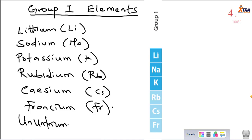Now let's go back and talk about the properties of group 1 elements. What are their general properties? We'll cover their physical characteristics — appearance, density, rigidity, malleability, ductility, and whether they are sonorous — as well as their chemical characteristics.